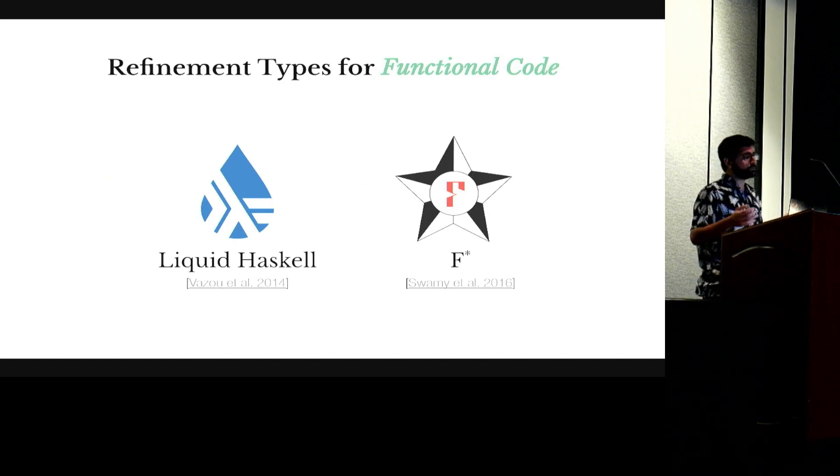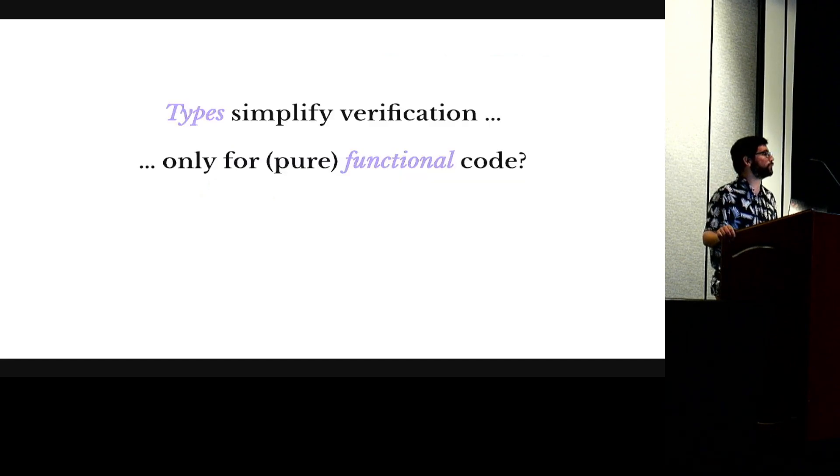So refinement types have been very successful in the functional world. They've been using tools like Liquid Haskell and F-star to verify various sorts of properties. So that begs the question, can we use the same techniques in imperative code, or is this only something that we can use in functional code?